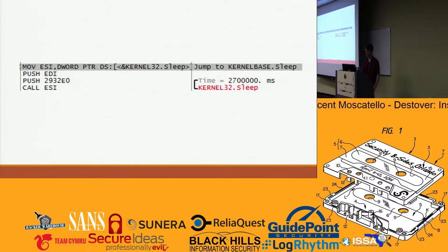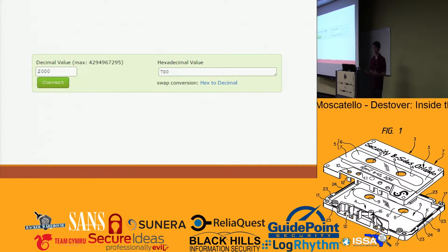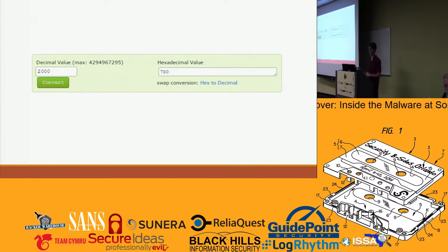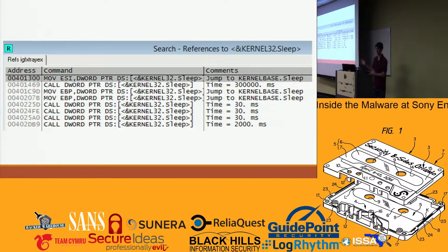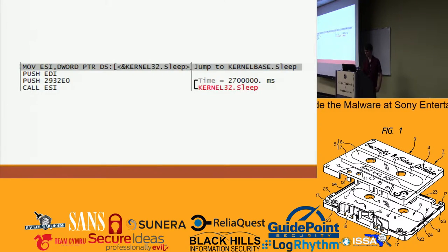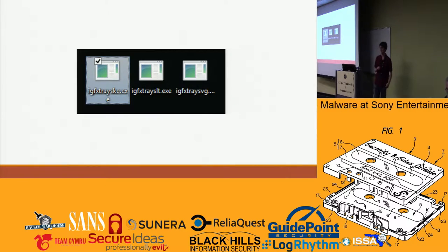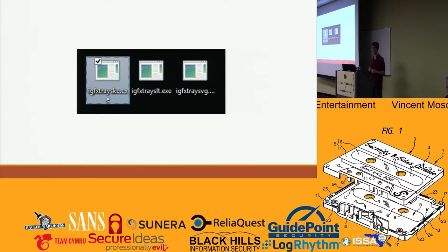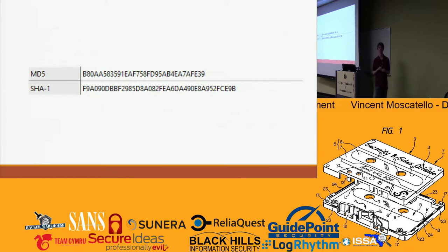One thing you can do is patch the binary and change some of these waits to much smaller times. I replaced values of 300,000 milliseconds with 2,000 milliseconds — shortening it to about two seconds. What you find is that IGFXtray creates three copies of itself and places them on the desktop. So now we have three IGFXtray executables to look at. Fortunately, they all have the same hash so you really only have to look at one of them.